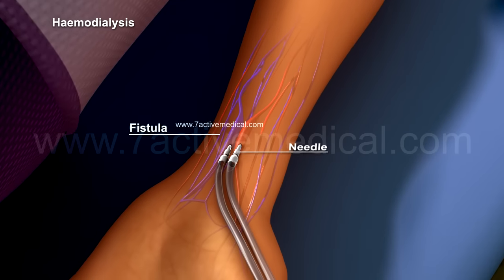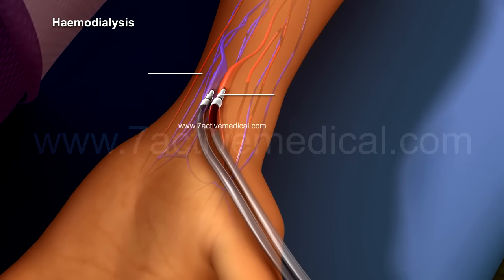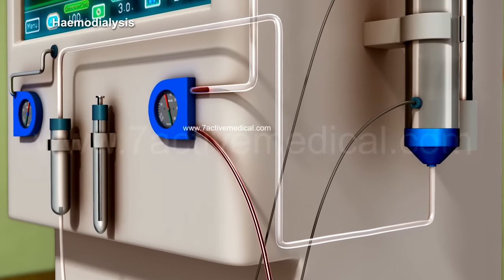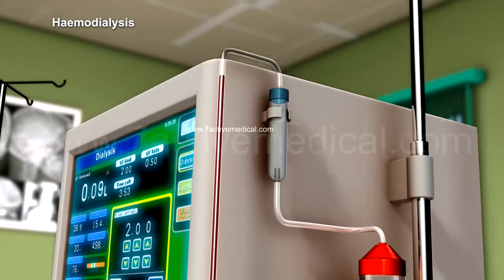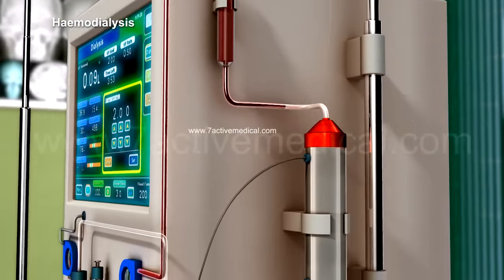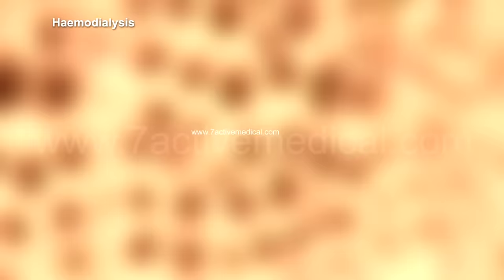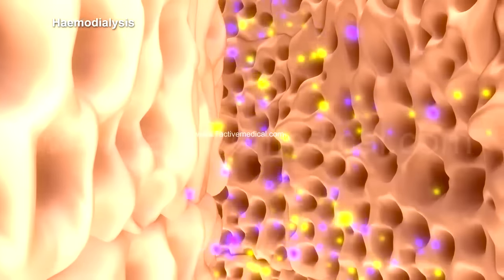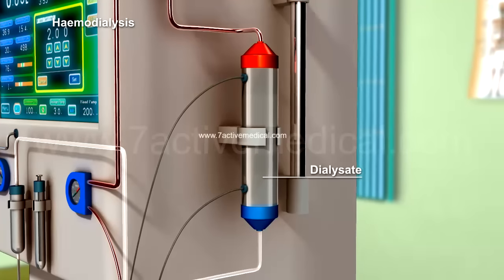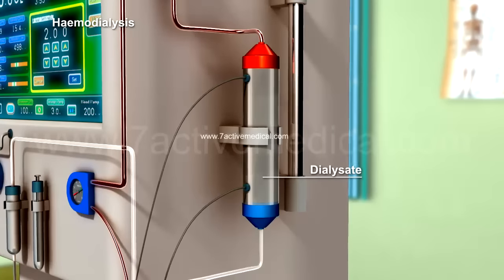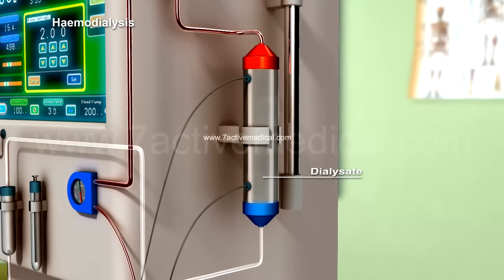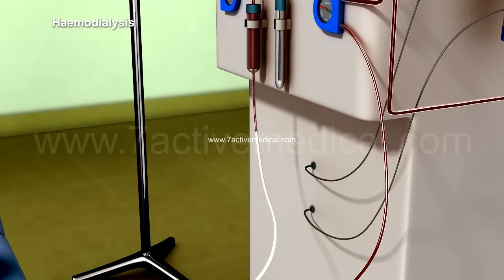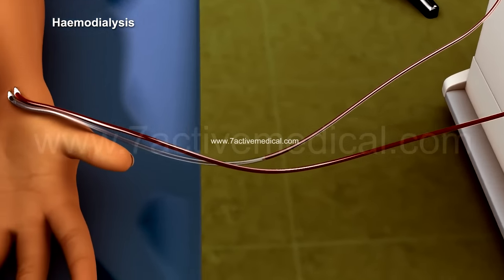At the start of the process, two needles are inserted into the fistula or graft, allowing a circuit to be set up with a dialyzer. Blood flows out of the body into the dialyzer, which consists of filtering fibers that remove waste products and excess fluid from the blood, and a dialysate, which acts as an absorbent solution for undesirable substances in the blood. Blood purified in this manner is returned to the body through the tubing into the second needle at the access site.